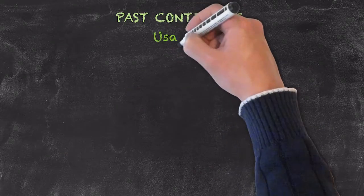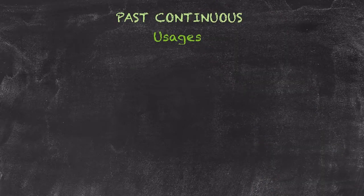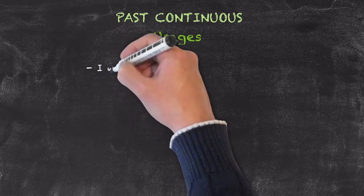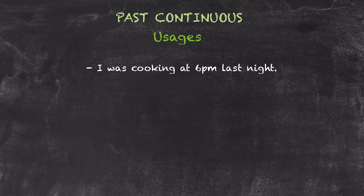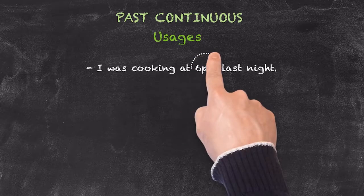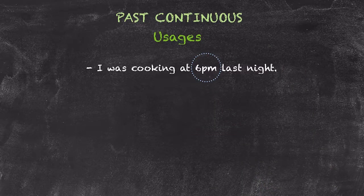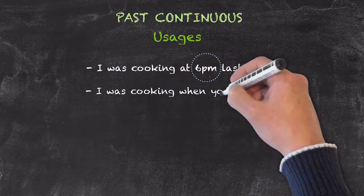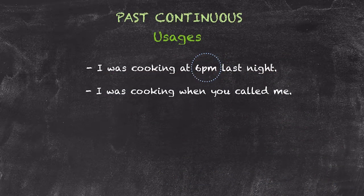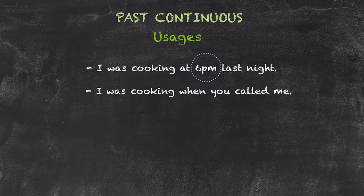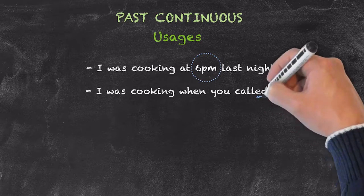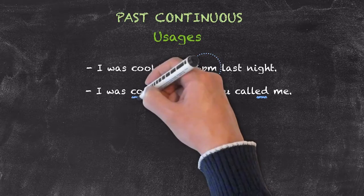The usage for the past continuous tense is expressing actions in progress at a time in the past. So one example could be, I was cooking at 6pm last night. It was an action that began, occurred, and finished at a particular point in time in the past, 6pm last night. Now, I could also say, I was cooking when you called me. It's the continuation of an action that happened at a particular time. That particular time needs to be conjugated into the past simple tense, as it wasn't continuing, rather the cooking was continuing.